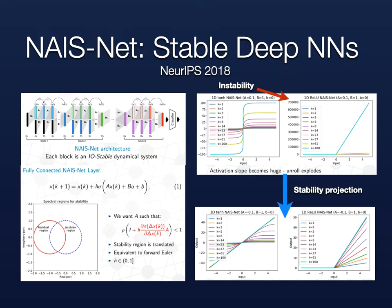If we consider the blocks as dynamical systems, then the absence of exploding gradients can be certified by the system's stability. As you can see in the figure, the unroll of an unstable block could result in increasingly large slopes. We propose an architecture called NASNet that addresses this problem. NASNet is made of residual-like RNNs that mitigate vanishing gradients, and we make the blocks stable by construction, meaning they can be unrolled forever without exploding gradients.